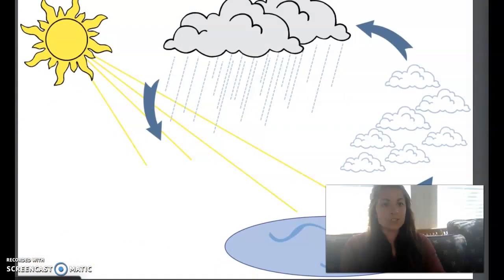Once precipitation occurs, this process starts all over again. Water on earth evaporates and rises up in the atmosphere as water vapor. And as it cools or condenses, clouds form once again.